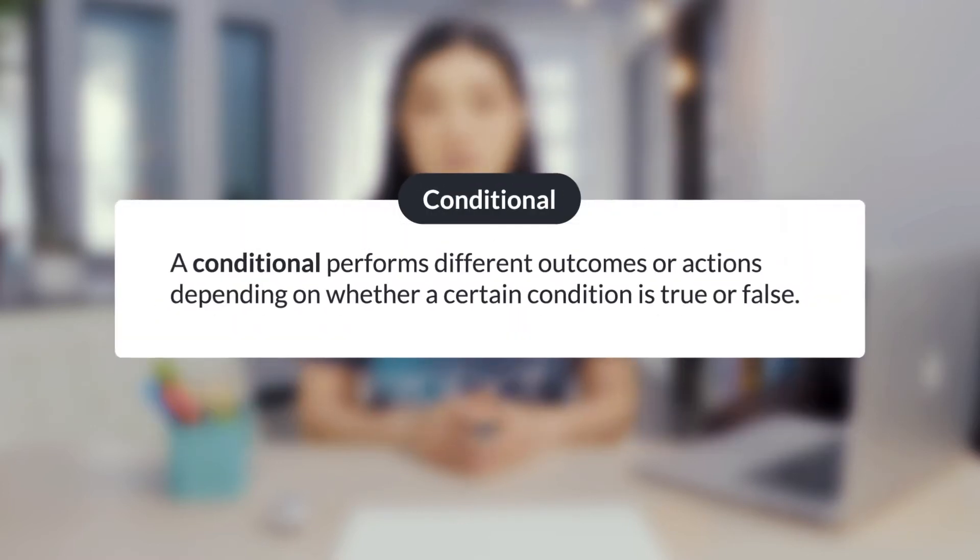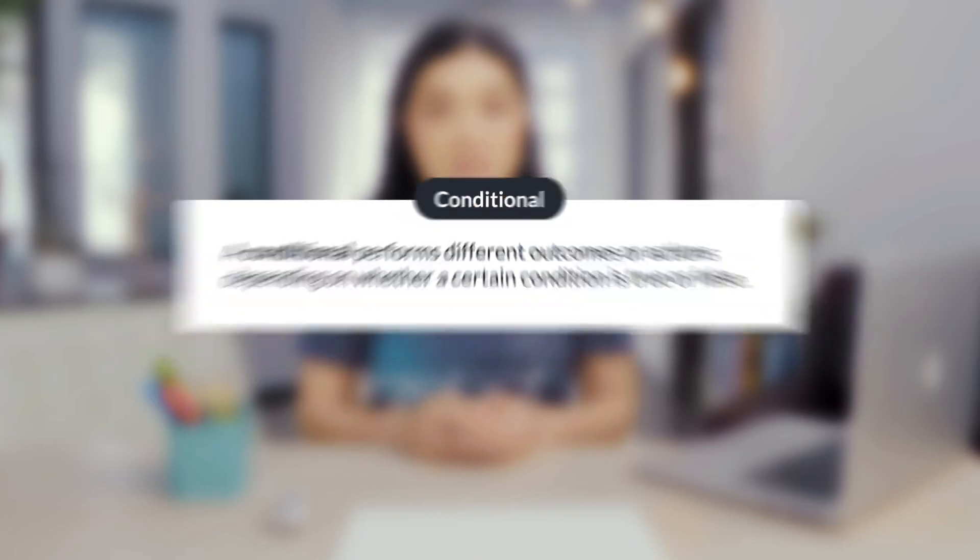A conditional performs different outcomes or actions depending on whether a certain condition is true or false. Here's the same code now with a conditional. The program will only run if or when an object is sensed in front of the bot.